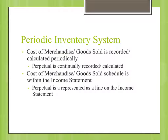Cost of merchandise sold — cost of goods sold — now becomes a schedule within the income statement. Under the perpetual system, it is simply a line item on the income statement.